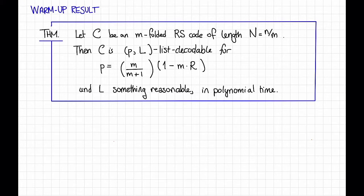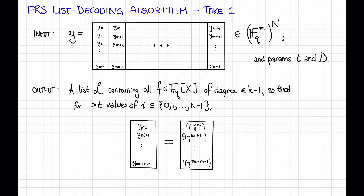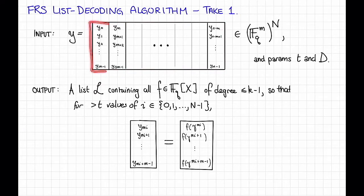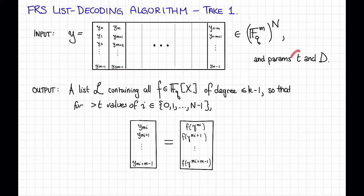We are going to prove this theorem by giving an algorithm. Our algorithm is going to take as input a received word Y, so Y is going to be of the same form as a folded Reed-Solomon codeword. So the first symbol is a little vector Y_0 through Y_{M-1}, the second symbol is Y_M through Y_{2M-1}, and so on. We're also going to take as input some parameters T and capital D, which we're going to choose later.